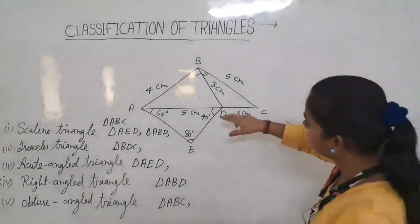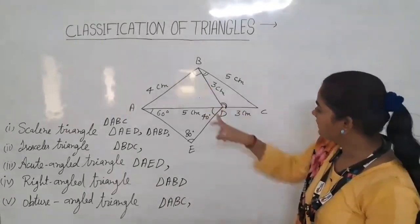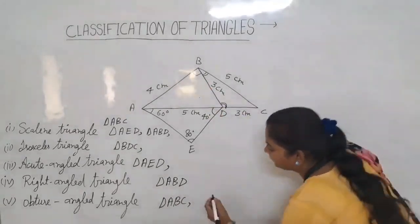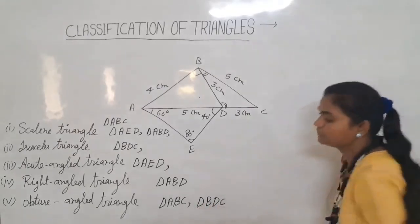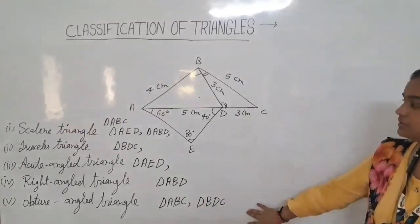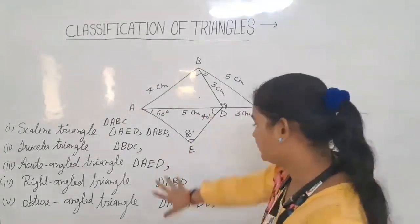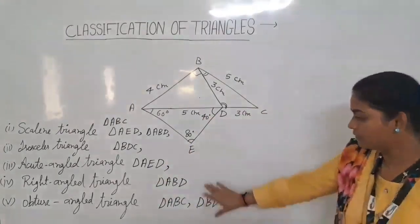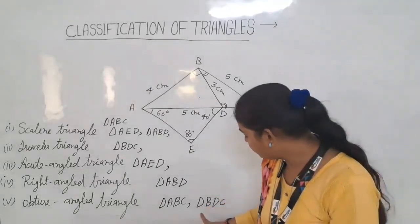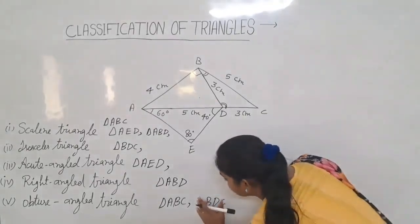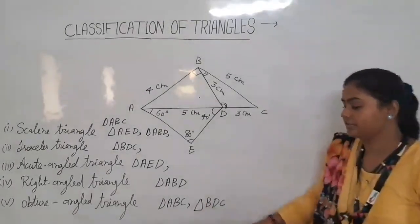Check out others. Triangle ADC also has an angle greater than 90, and triangle DDC is also an obtuse angle triangle.